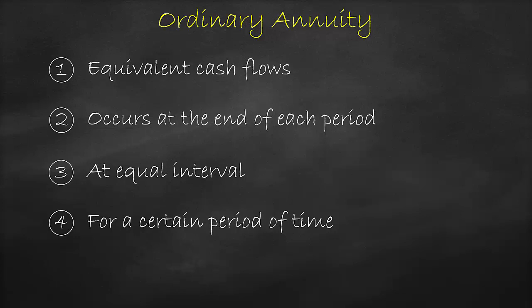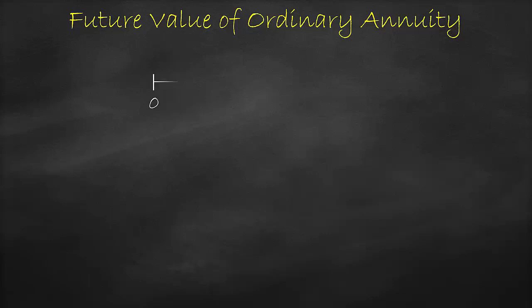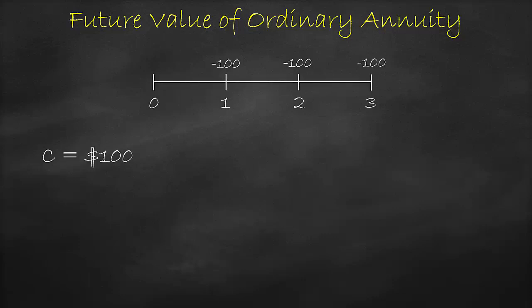We have a present value of the ordinary annuity and future value of the ordinary annuity. Let's look at an example of the future value of an ordinary annuity. Let's say that you will receive a cash flow of $100 per year for the next three years. The effective annual interest rate is 10%. Let's calculate the future value at the end of year three.